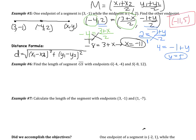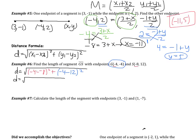Example 6: find the length of segment GS with endpoints G at (negative 4, negative 4) and S at (negative 8, 12). Let's apply the distance formula. I take the x-values — negative 4 and negative 8 — and subtract them: negative 4 minus negative 8. It doesn't matter which one comes first, you just have to stay consistent. For the y-values, since I started with the first point, I use negative 4 minus 12, then square it. Subtracting a negative is like adding, so negative 4 plus 8 equals 4.